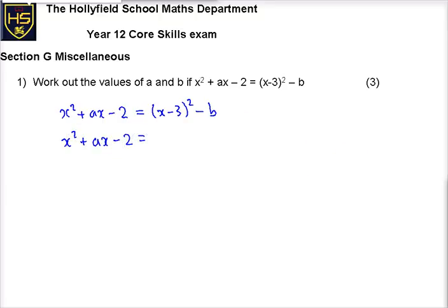So x squared plus ax minus 2 is equal to, if I just expand up this bracket here as x squared minus 3x, what am I going to get? From here, I'm going to get plus 9 and then I can't forget my minus b.